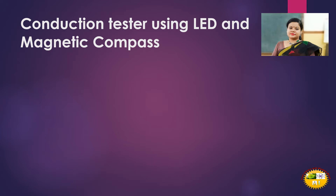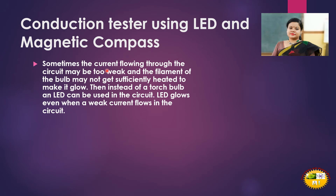We can also build a conduction tester using an LED and a magnetic compass. In our previous experiment we used a bulb, but a bulb needs a specific amount of electric current to heat its filament and glow. If only a weak electric current is passing through the circuit, it may not be enough for the bulb to glow. Instead of a torch bulb, an LED can be used, as it glows even when a weak electric current flows through the circuit.